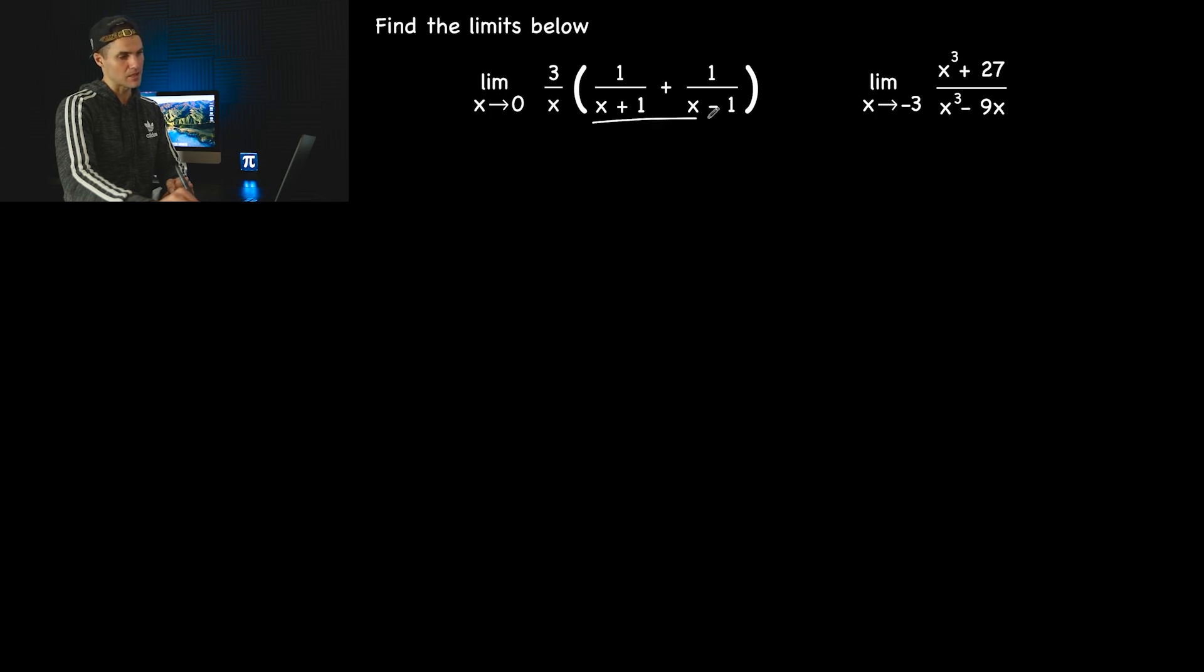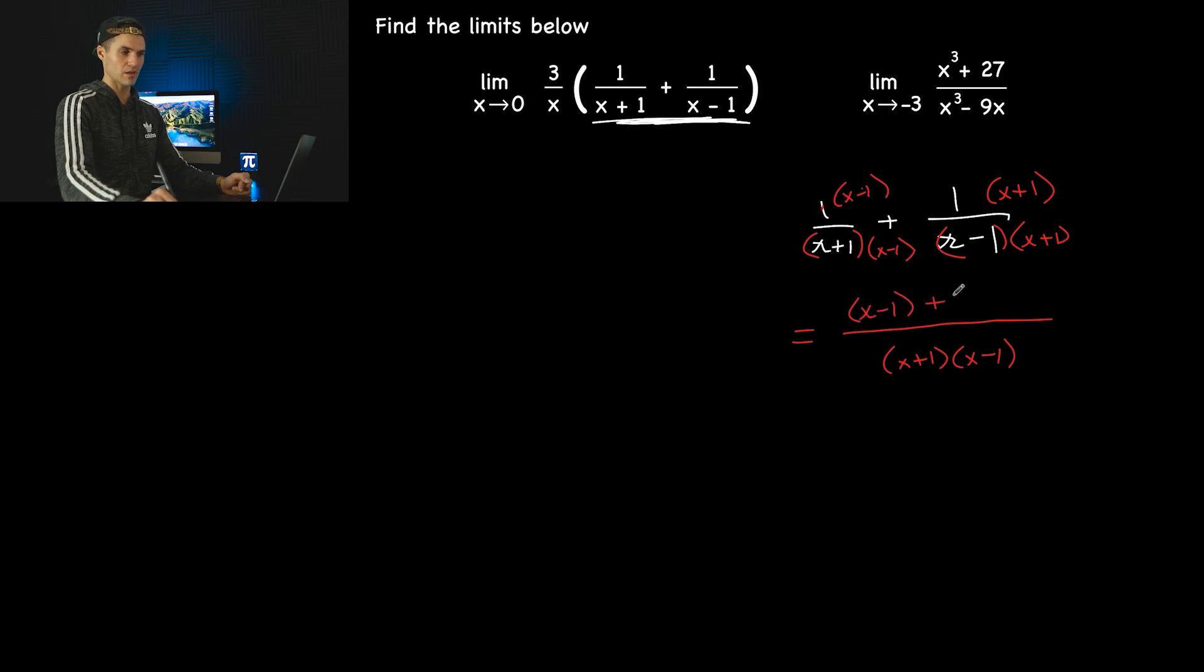What I'm noticing is we could take these two expressions that are fractions. Let's write them on the side. We can combine them into one. To combine these, we have to get a common denominator. We would multiply this x plus 1 by this x minus 1 for the lowest common denominator. So we'll have x plus 1, x minus 1. Then we'll have 1 times x minus 1, so it's just x minus 1 plus x plus 1 in brackets.